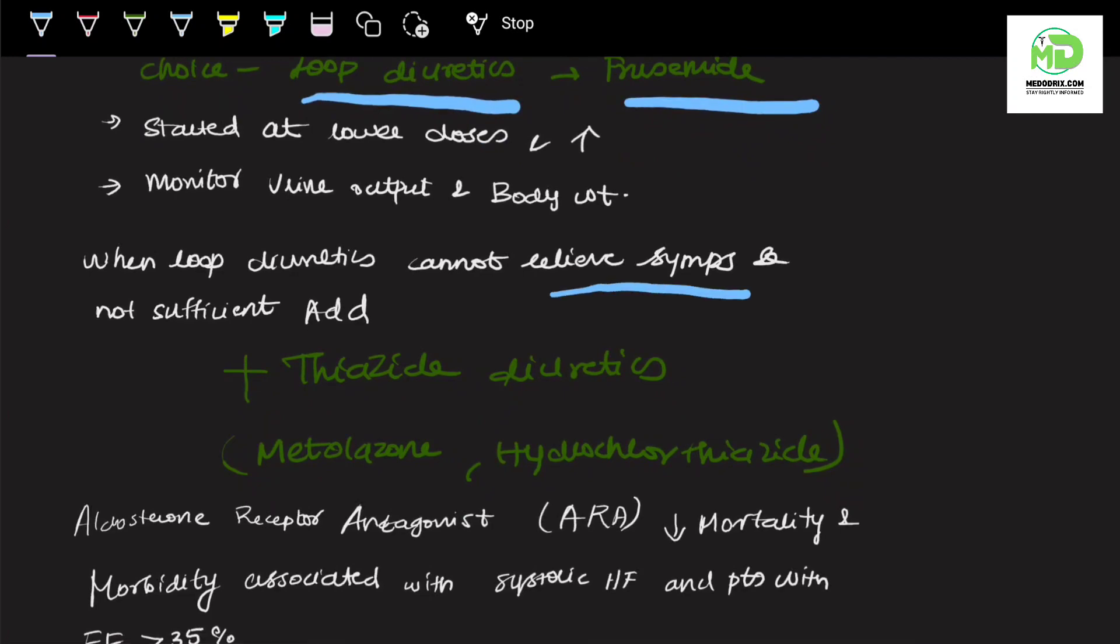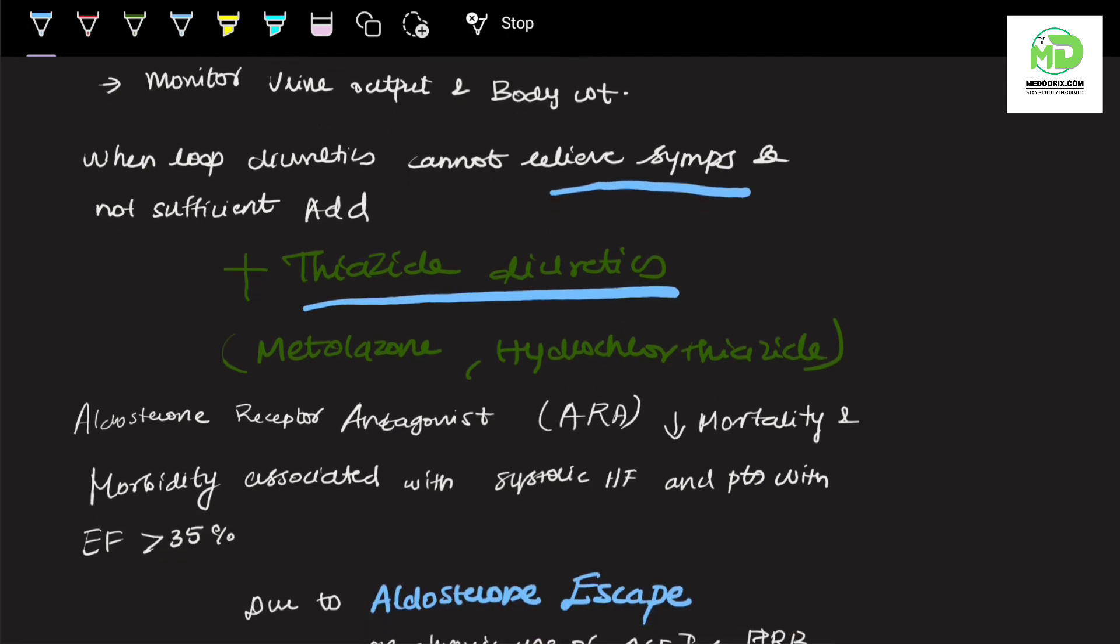When loop diuretics cannot relieve the symptoms or when loop diuretics alone is not sufficient, we will add thiazide diuretics, for example hydrochlorothiazide and metolazone.